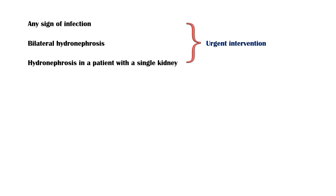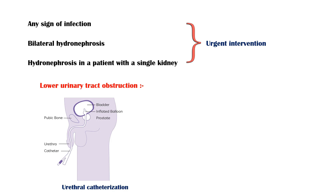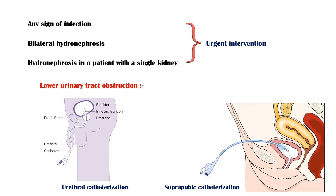If the obstruction is in the lower urinary tract, such as the bladder neck or urethra, urethral catheterization may be done. However, it is important to note that the pathology itself may complicate the insertion of a urinary catheter. For example, if there is a urethral stricture, catheterization may be difficult to perform. If urethral catheterization fails, suprapubic catheterization may be indicated.